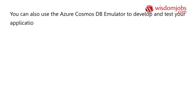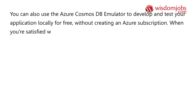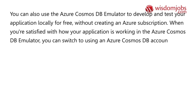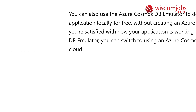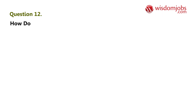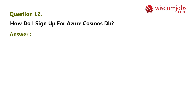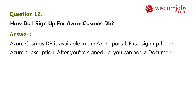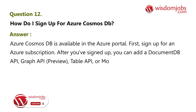You can also use the Azure Cosmos DB emulator to develop and test your application locally for free without creating an Azure subscription. When you're satisfied with how your application is working in the emulator, you can switch to using an Azure Cosmos DB account in the cloud. Question 12: How do I sign up for Azure Cosmos DB? Answer: Azure Cosmos DB is available in the Azure portal. First, sign up for an Azure subscription, then you can add a DocumentDB API, Graph API, Table API, or MongoDB API account to your Azure subscription.